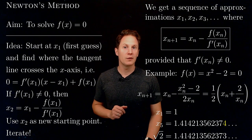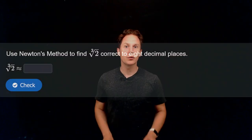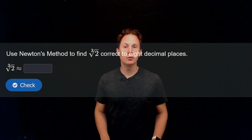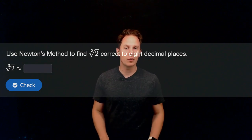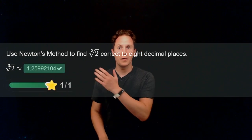Let's look at another example of Newton's method. Use Newton's method to find the cube root of two correct to eight decimal places. So pause the video and input your answer in the box. Hope you paused it and have found this number.